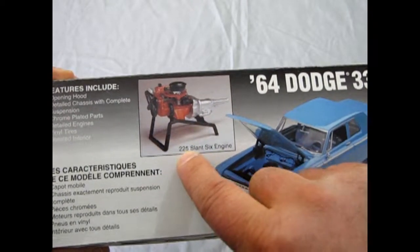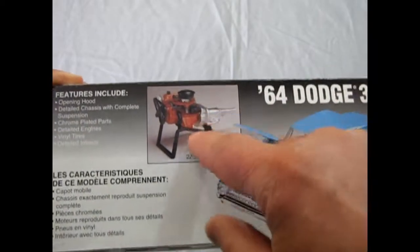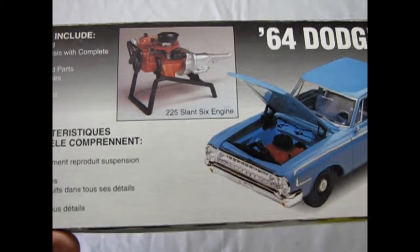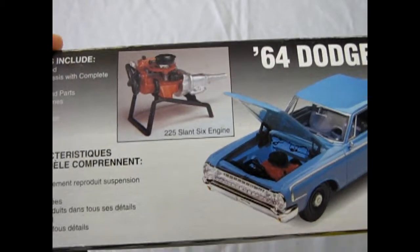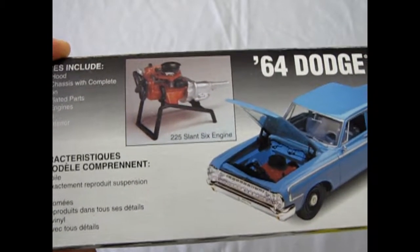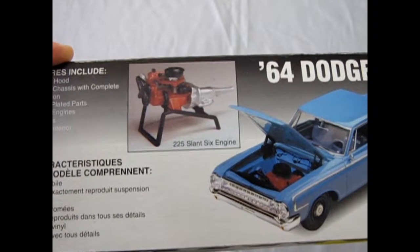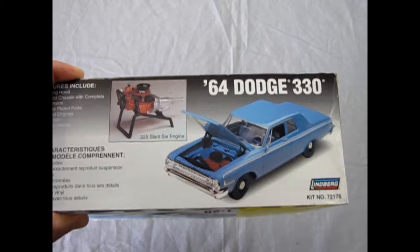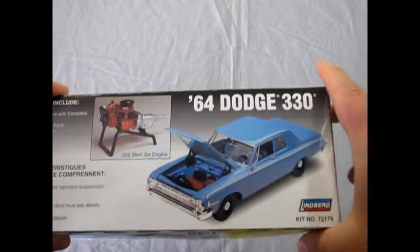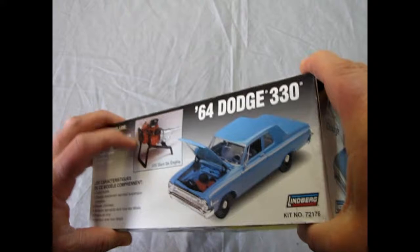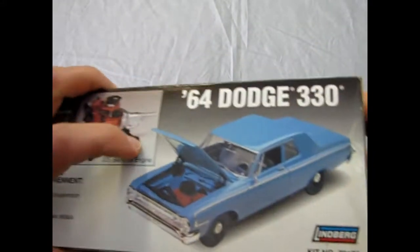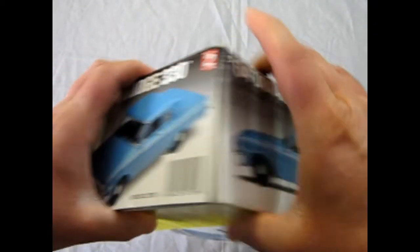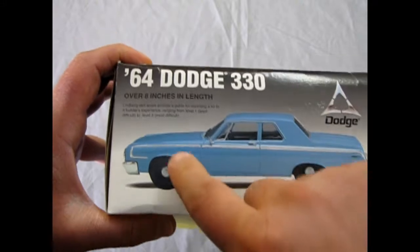And I show you the old 225 Slant 6 engine. This motor had a big long run in the Chrysler lineup. I had a neighbor whose mom, back in the 80s, had a Dodge Dart with that Slant 6 in it. And that was like a 69 Dodge Dart. So anyway, most of you guys will know the history of that engine. So oh there it shows the hood up with the V8 inside.